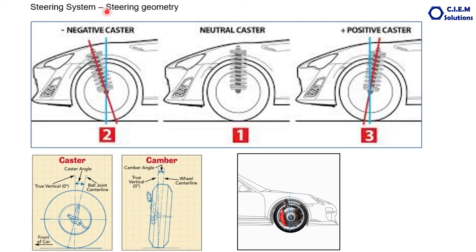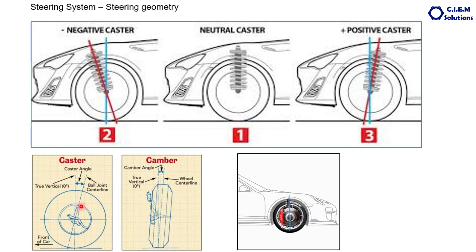You have to see the difference between caster and camber. The camber is the angle between the perpendicular line from the ground, viewed from the front side, and the line passing through the center of the tyre. The caster angle is viewed from the side of the tyre — the kingpin or steering axis and the vertical straight line form the caster angle. If the steering axis is forward, it is positive caster; if behind the vertical line, it is negative caster.